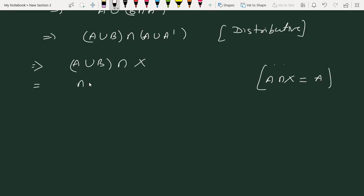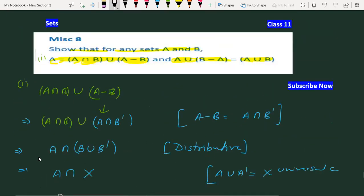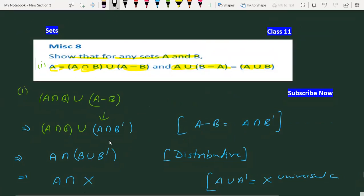This property is important to understand. A ∪ B appears here, which proves the second part as well. This was a miscellaneous question based on properties of sets. Hope everyone understood. Thank you very much.